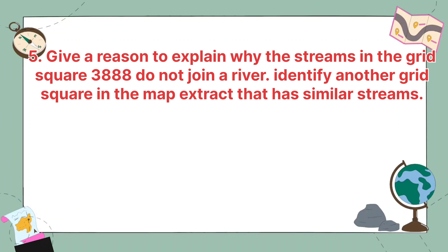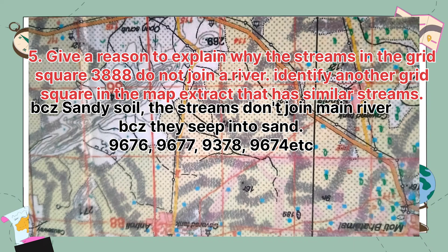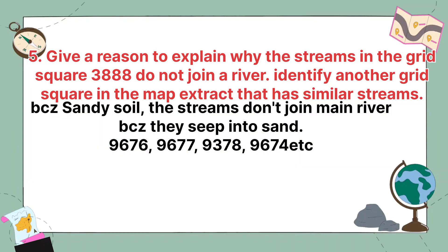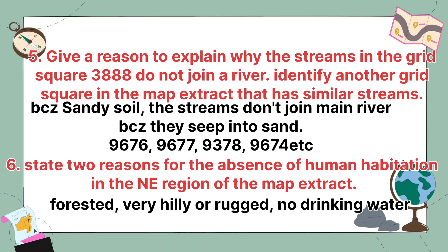Give a reason to explain why the streams in grid square 9478 do not join a river, and identify another grid square that has similar streams. The reason is because of sandy soil — the streams don't join the main river because they seep into the sand. Similar streams can be found in grid squares 9676, 9677, 9378, and 9674.